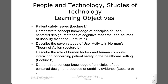Describe the seven stages of user activity in Norman's Theory of Action. Describe the role of human factors and human-computer interaction concerning patient safety in the healthcare setting. Demonstrate concept knowledge of principles of user-centered design and sources of usability evidence.